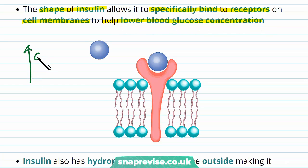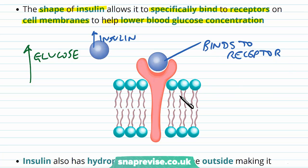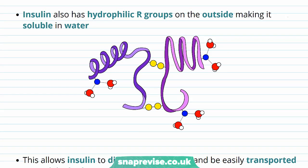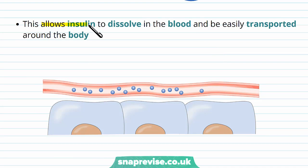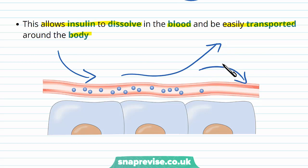If blood glucose rises too high, insulin is released from the pancreas, binds to receptors on particular cell membranes, and through various interactions causes blood glucose to drop back down. Insulin also has hydrophilic R groups on its outside, making it soluble in water, which allows it to dissolve in the blood and be transported around the body. Once it has left the pancreas it can travel everywhere to help ensure blood glucose does not go too high.